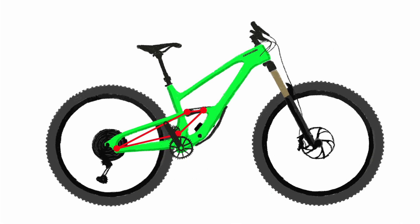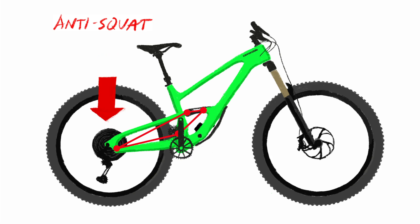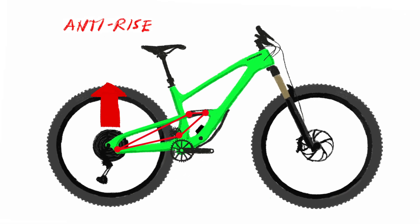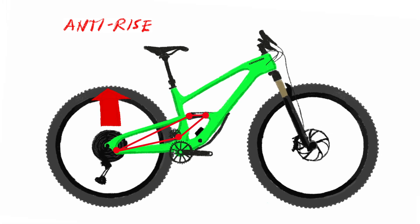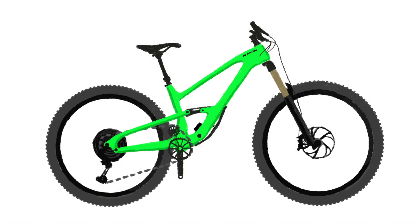The four bar system lets us design in forces that counteract these effects, which are called, obviously enough, anti-rise and anti-squat. This means when you're pedaling, the suspension doesn't squat too much, and when you're braking, it doesn't rise too much. It stays right in that sweet spot, giving you maximum traction, maximum bump absorption, for maximum speed.